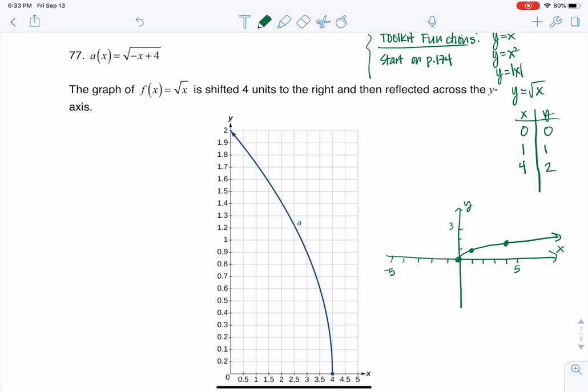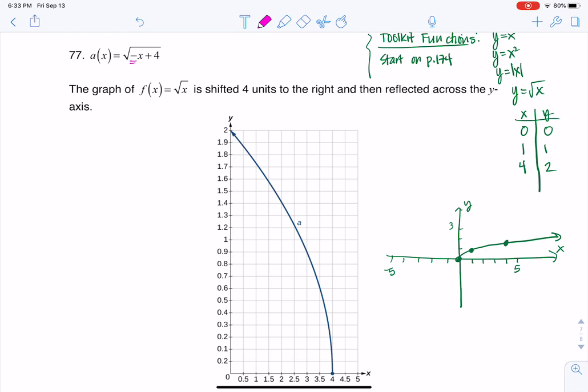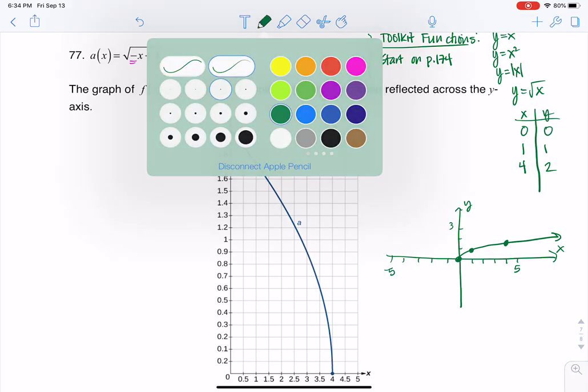Now how does that relate to 77? Well, I want to get this in the proper form, and when I take a look at what I see here, I see a negative out in front of that x and I also see a positive 4. But we need to be careful. It's not ready to be seen as a transformation yet. What we have to do is factor out that negative.